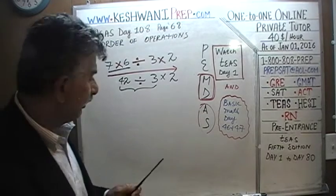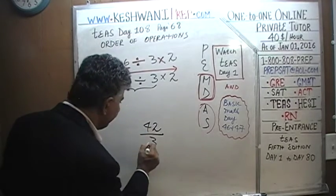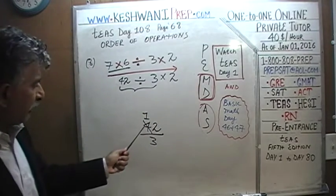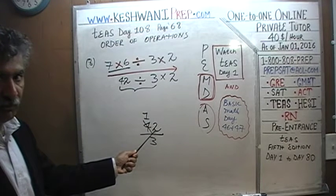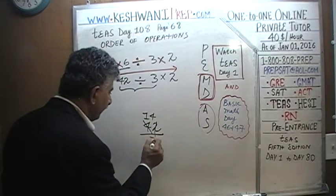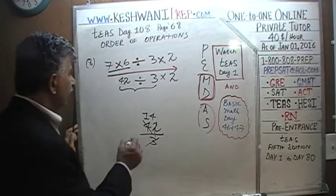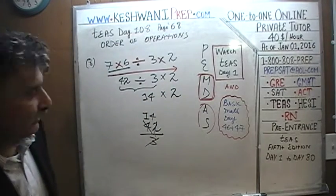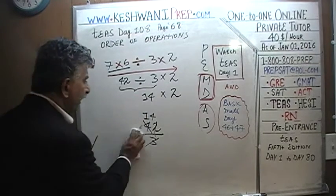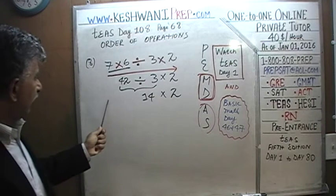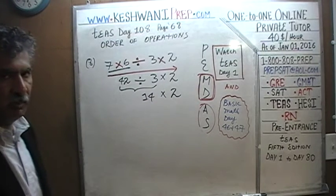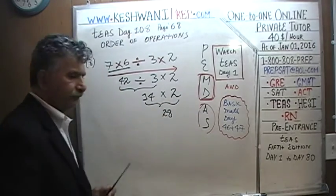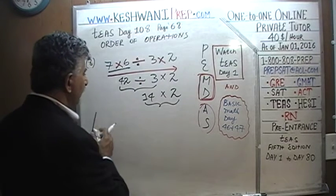42 divided by 3: how many 3's does 4 have? One 3, remainder 1. That 1 joins the 2 to make 12, and 12 has four 3's. So 42 divided by 3 is 14. Line up your numbers properly — notice how everything should line up so you know you're not making a mistake. Then 14 times 2 is 28. The answer to this problem is 28.